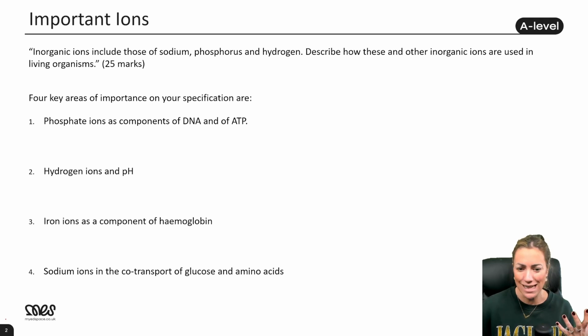We've got: inorganic ions include those of sodium, phosphorus, and hydrogen. Describe how these and any other inorganic ions are used in living organisms. It's a really nice question. Obviously they're always a little bit scary, but there's absolutely loads that we can talk about from the entire specification. So there are four kind of key areas of importance that you might have covered in year 12, so let's talk about those first.